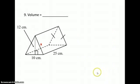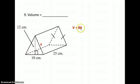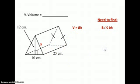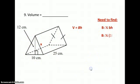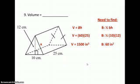Number 9: find the volume of a rectangular prism given the information shown. The volume equals B times H, where B is the area of the base and H is the height — the distance between the bases. We still need the area of the base. Since the base is a triangle, we use one-half b times h: one-half times 10 times 12 equals 60. With a height of 25, we plug those into the formula, and our answer is 1,500 cubic inches.